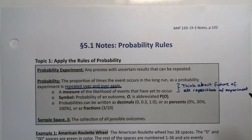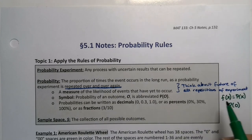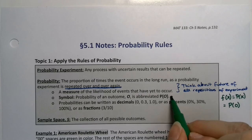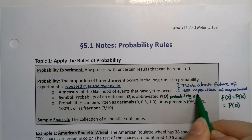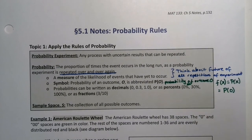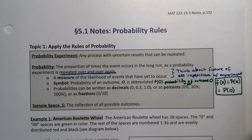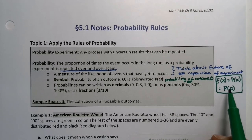If you remember function notation from algebra class, when they would do f(x), it's the same thing. So P(x) or P(O), it's the probability of outcome O. When you see P(O), they're saying what's the probability of that outcome O?